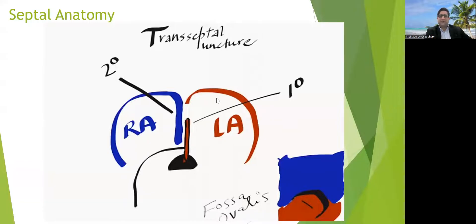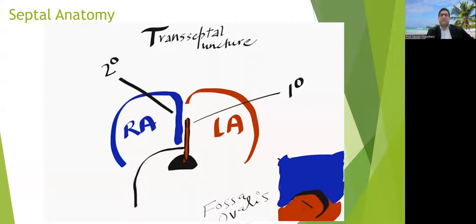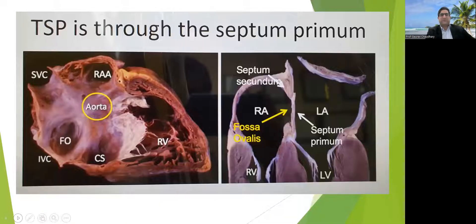When we look at the septum, one thing should be in mind: we are going to do the puncture where we have only a single layer or the thinnest point. Embryologically, in the superior portion we have two layers — septum primum and septum secundum — but if we go to the postero-inferior area, the fossa ovalis contains only one layer, septum primum. That is the thin area and that is the area where we should target our needle.